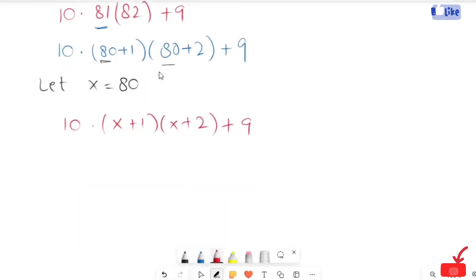Now, I'm going to multiply both these brackets by using the FOIL method. So, I will get 10 times (x squared plus 3x plus 2) plus 9.